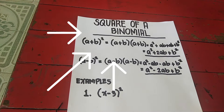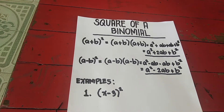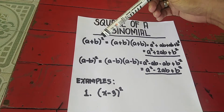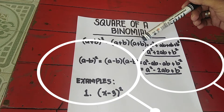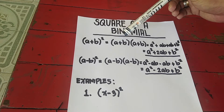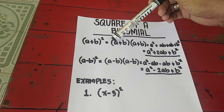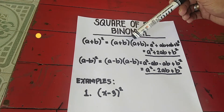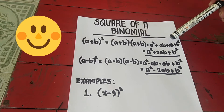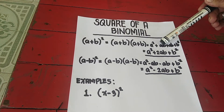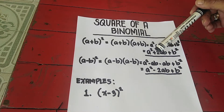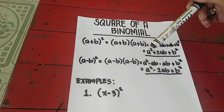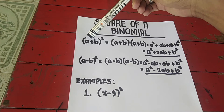Our lesson for today is the square of a binomial. So (a + b) squared is the same as (a + b) multiplied by (a + b). The long method: distribute — a times a is a squared, a times b is ab, b times a is ab, and b times b is b squared. Combine similar terms: ab plus ab is 2ab. So the answer is a squared plus 2ab plus b squared.